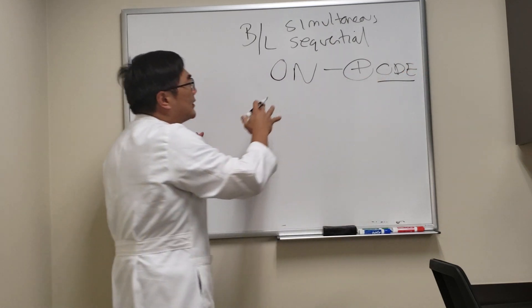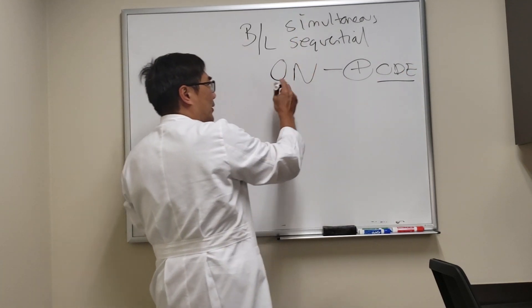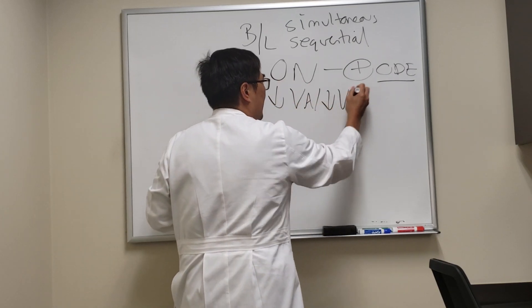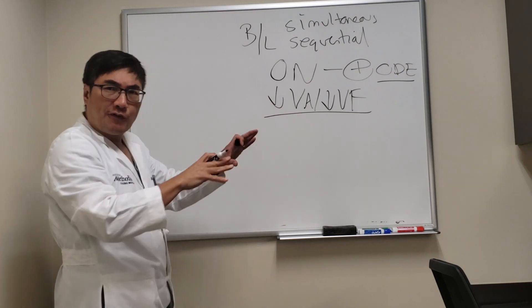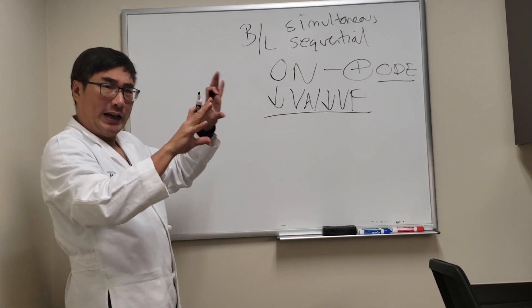This scenario comes up a lot where you have bilateral optic neuropathy, therefore decreased visual acuity and decreased visual field. Usually it's going to be a nerve fiber layer distribution. Central scotoma very common, but also arcuate altitudinal.